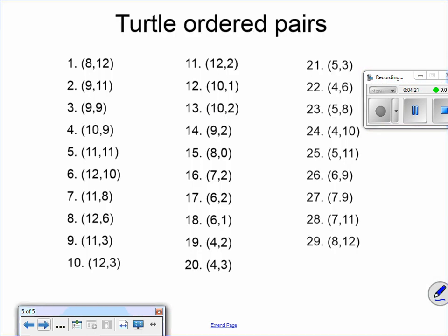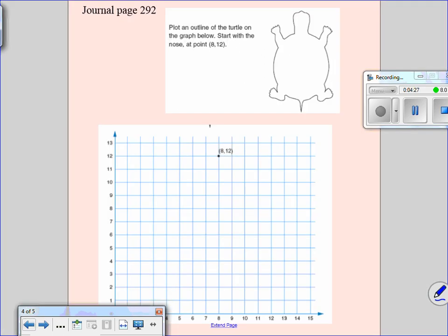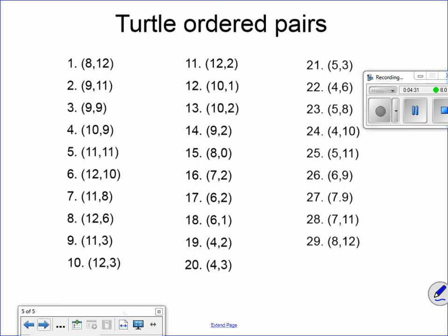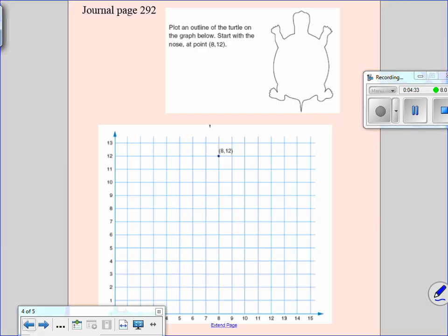Here are your ordered pair coordinates. Do them in that order. Play dot to dot, dot to dot. It will work. The very first one is 8, 12. As you can see, the very first one is 8, 12. And your next line is going to be 9, 11. So you're going to go over 9, up 11. And then you connect those two.